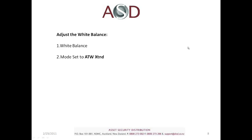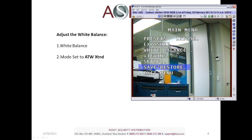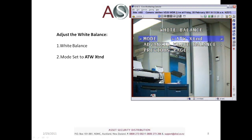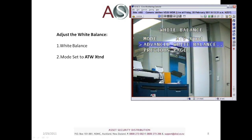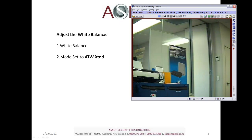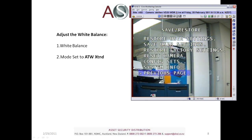The next thing we want to do is adjust the white balance. Click on White Balance, click on Mode, and adjust it to ATW Extended. It should normally be on ATW Normal, but we've found in the field that ATW Extended gives a better picture. Once you've set that, come back out and remember to save the settings, then go back to the main menu.